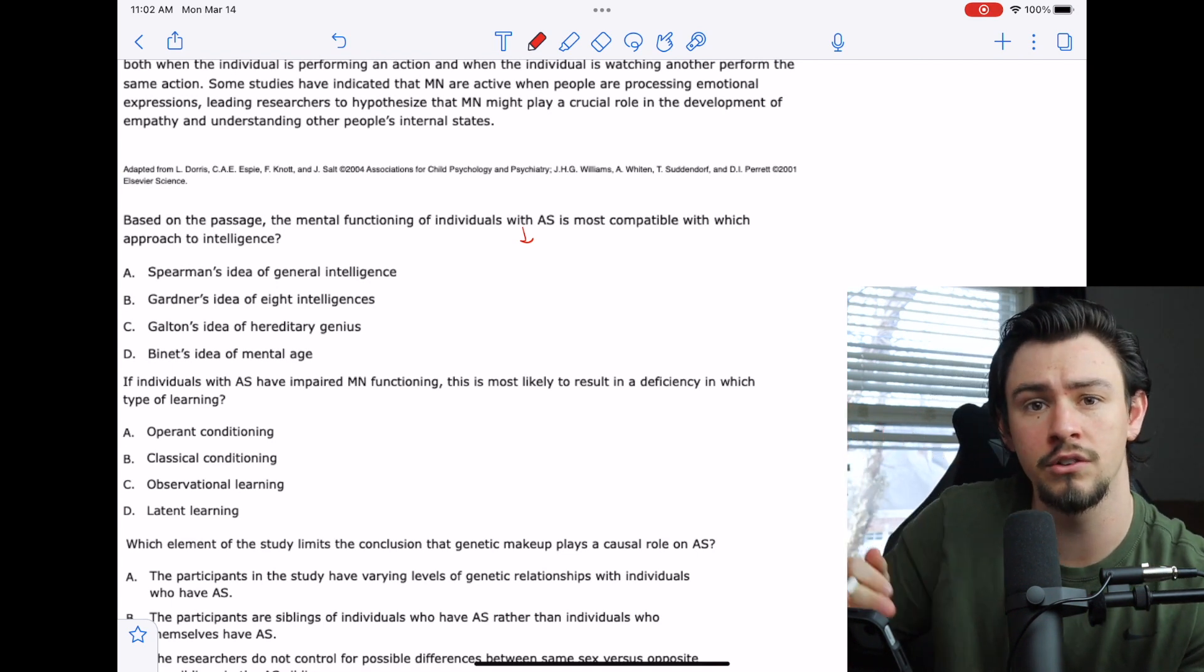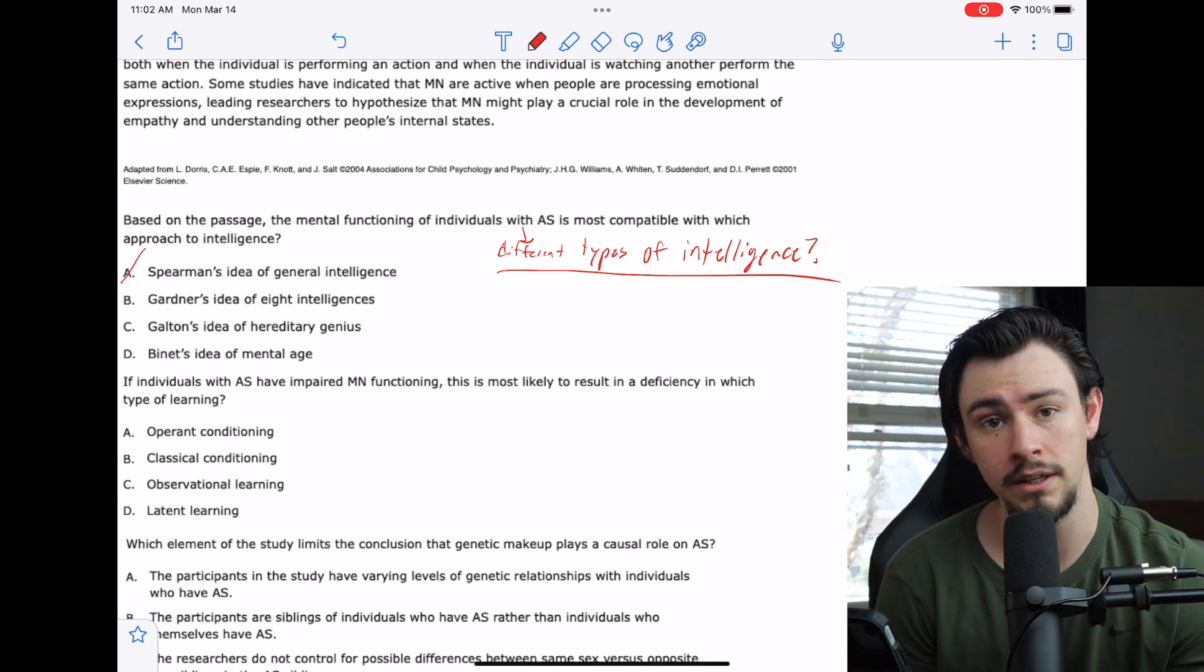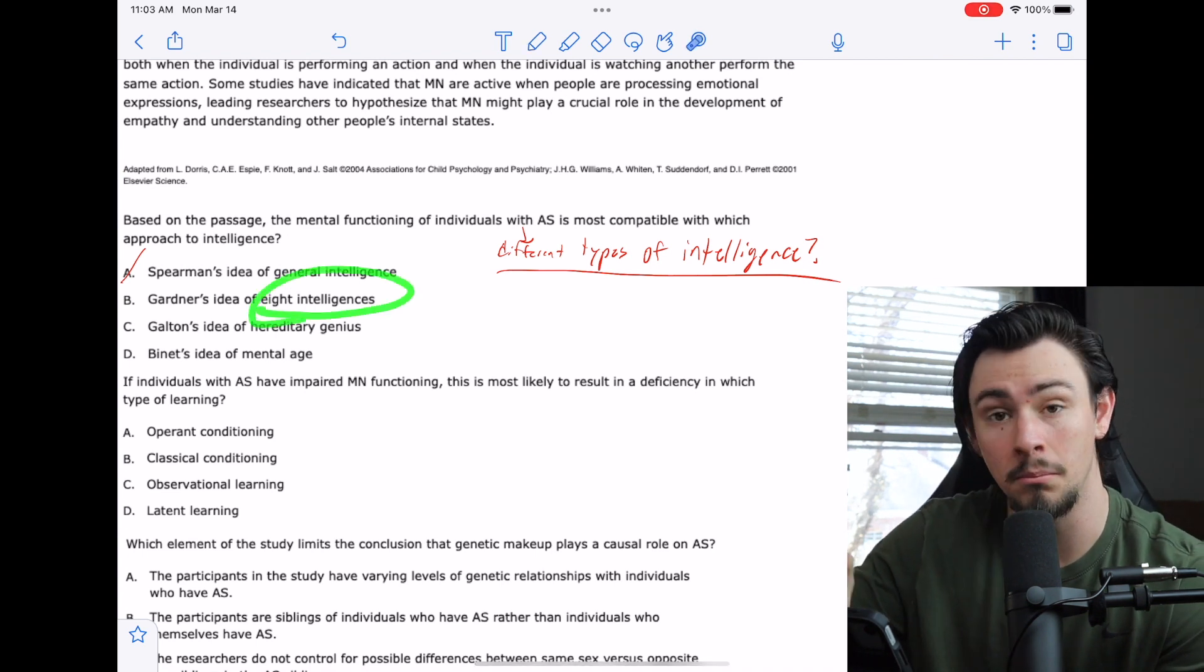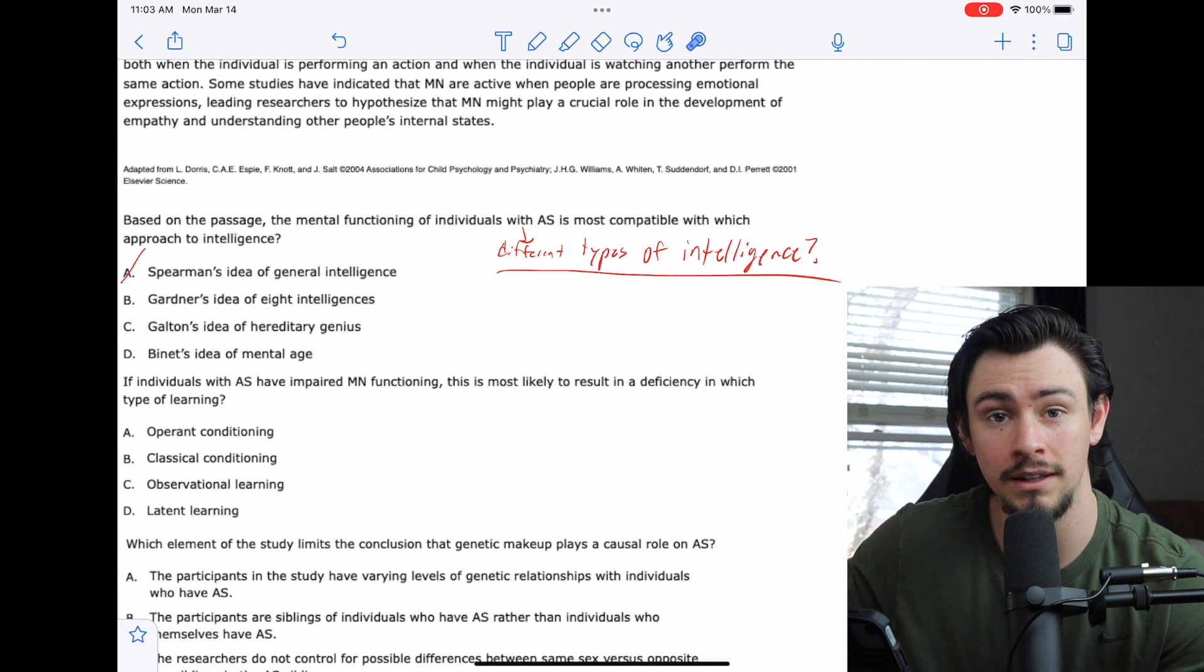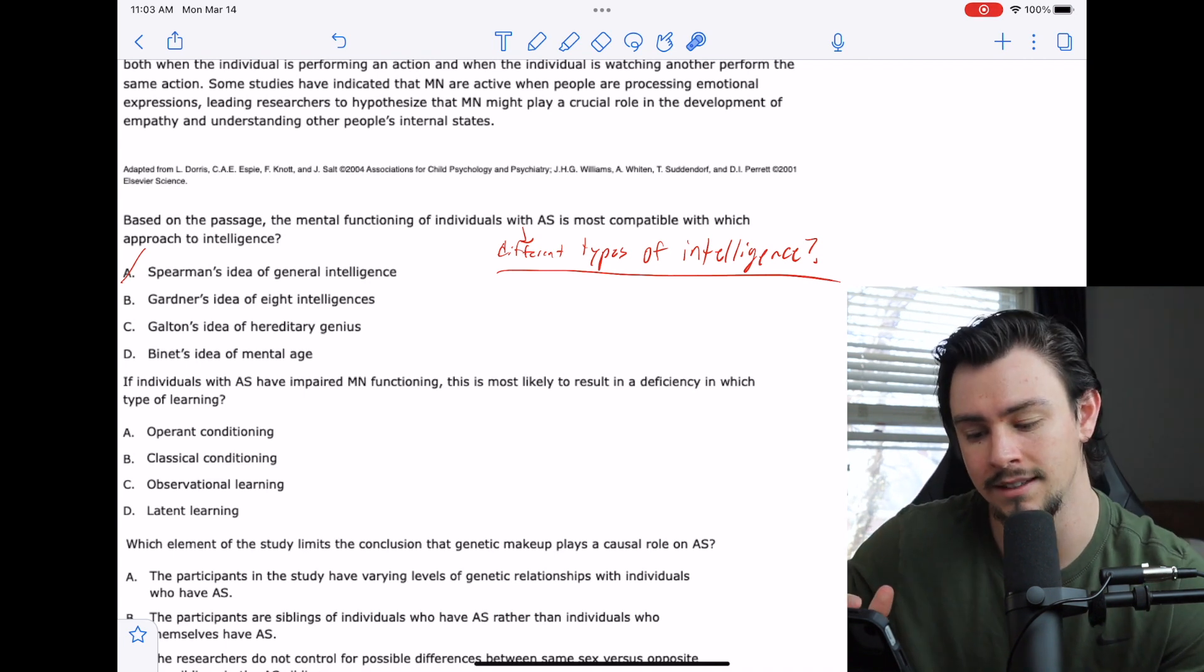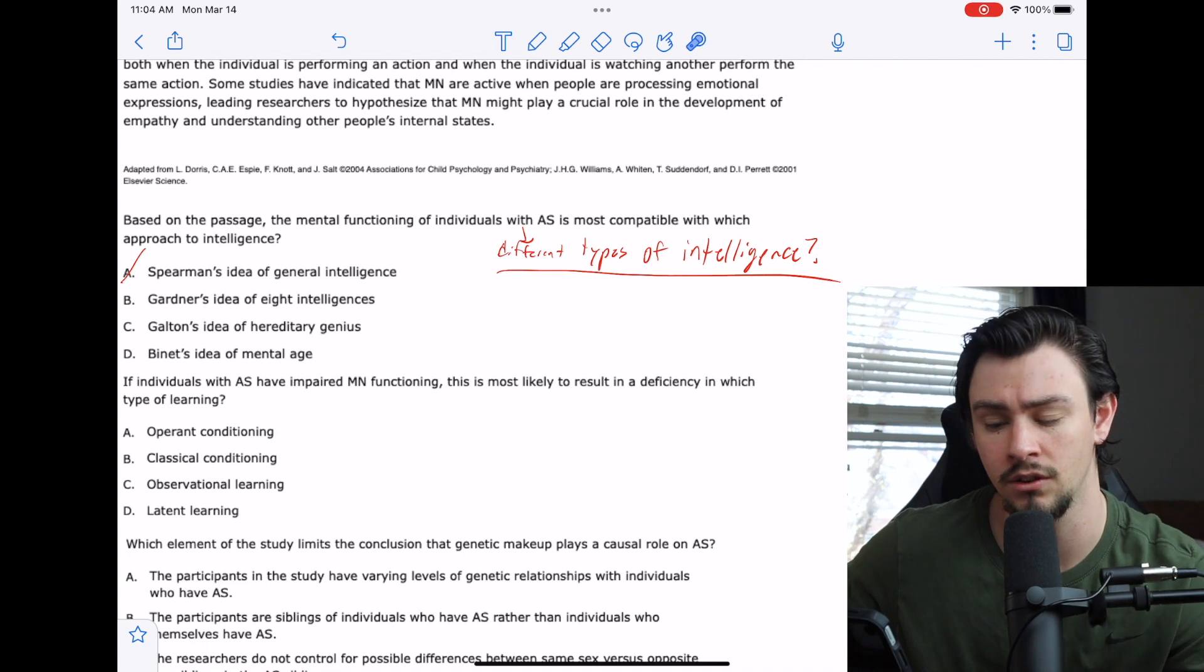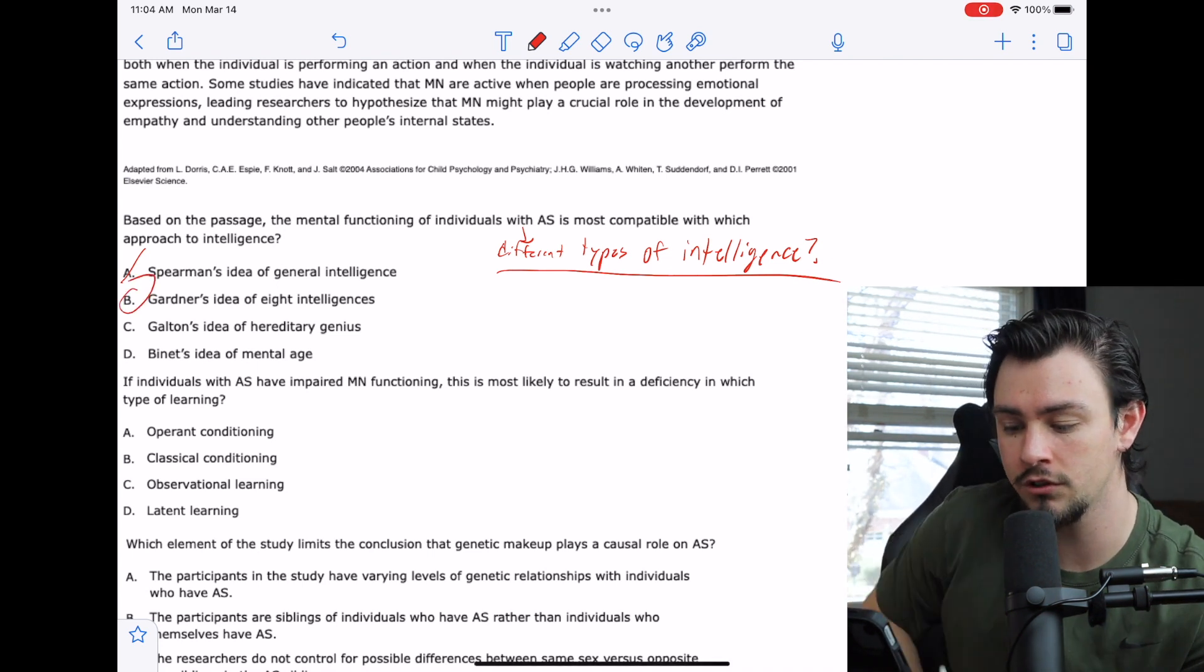Answer choice A says Spearman's idea of general intelligence. This is just the idea that you're smart or you're not smart. I don't like that because that doesn't show that we have many different types. B says Gardner's idea of eight intelligences. That means that there's multiple ones, so I'm going to leave that in as an answer choice. C says Galton's idea of hereditary genius, which probably means intelligence is passed along as a biological trait. And D is Binet's idea of mental age. Which of these seems to allow room for there to be multiple types of intelligence? That would be B, Gardner's idea of eight intelligences.